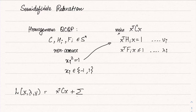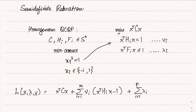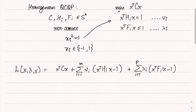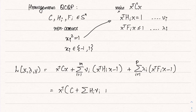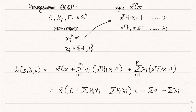...summation over i of ν_i (x^T H_i x − 1) plus summation over i of λ_i (x^T F_i x − 1). Grouping in terms of x, we can write it as x^T (C + Σ H_i ν_i + Σ F_i λ_i) x minus Σ ν_i minus Σ λ_i. This is the Lagrangian.